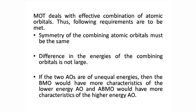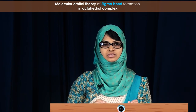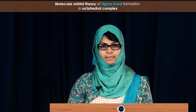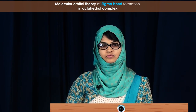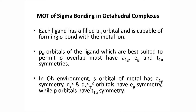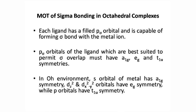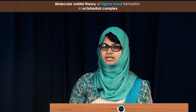We shall move on to the molecular orbital theory of octahedral complexes. In octahedral complexes the metal is surrounded by 6 ligands. This theory can be studied under two headings: sigma bond formation and pi bond formation. We shall concentrate on the sigma bond formation. The molecular orbital theory of sigma bond formation in octahedral complexes says that the 6 ligands will provide 6 filled P sigma orbitals, with each ligand providing one P sigma orbital for sigma bond formation.